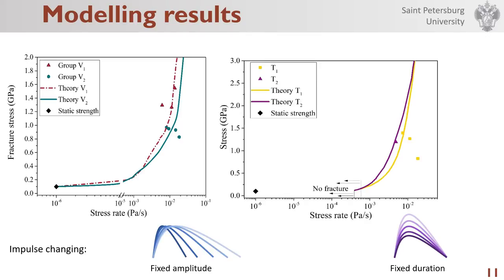Let's move on to the modeling result. Dots on the graph are experimental data, and lines are the result of modeling. Each curve corresponds to a calculation performed for one given impulse form.